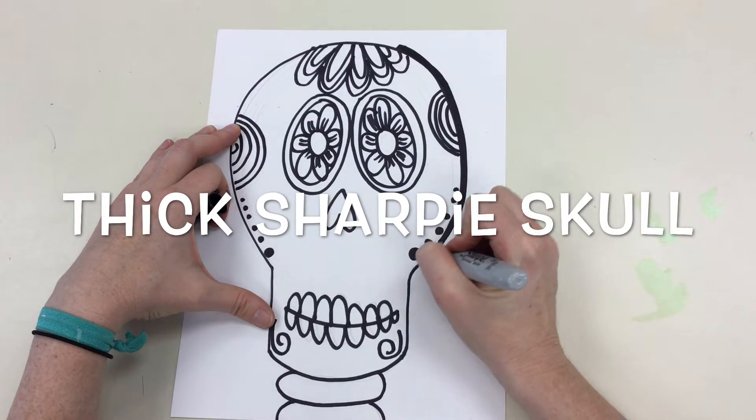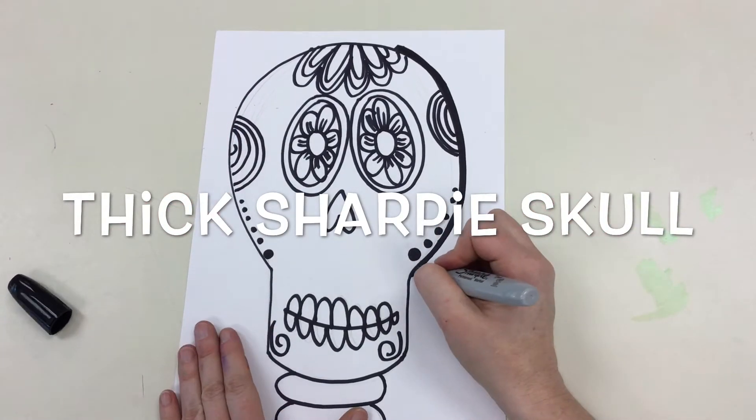Use a super thick sharpie to trace around your original skull that you drew.